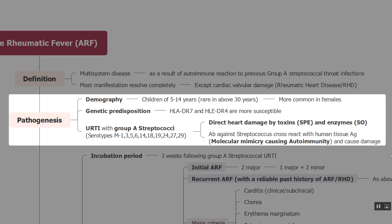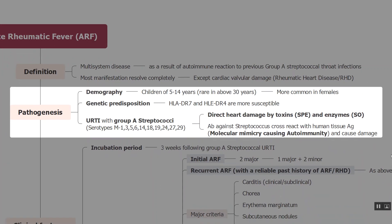Regarding the demography and susceptible populations: Acute Rheumatic Fever is most commonly seen in children of 5 to 14 years of age and is rare above 30 years of age. Females are usually more affected compared to males. There is also a genetic predisposition — HLA-DR7 and HLA-DR4 are more susceptible than the rest of the population.